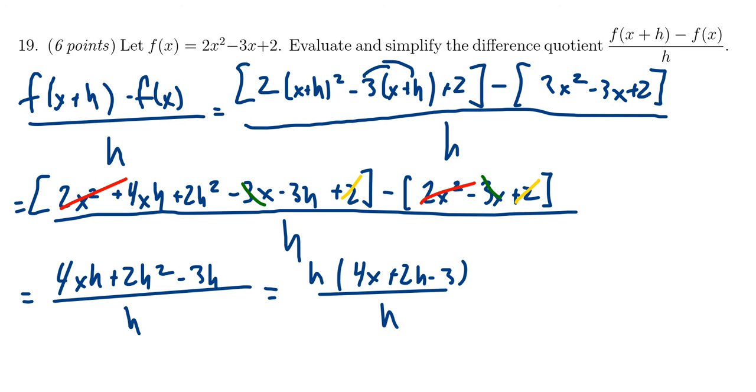So now we're at the moment of joy and ecstasy here. We found a divisor of h in the numerator. It'll then cancel out with the divisor of h in the denominator. And we're left now with the simplified difference quotient of 4x plus 2h minus 3. This is the quantity we were looking for and now we're done.